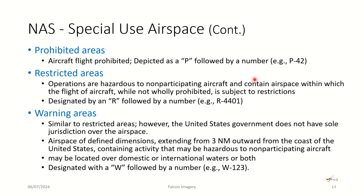Warning areas are similar to restricted areas; however, the United States government doesn't have sole jurisdiction of the airspace. They extend from three nautical miles outward from the coast of the U.S. and contain activity that may be hazardous to non-participating aircraft. They may be located over domestic or international waters, or both, and are depicted by a W followed by a number.